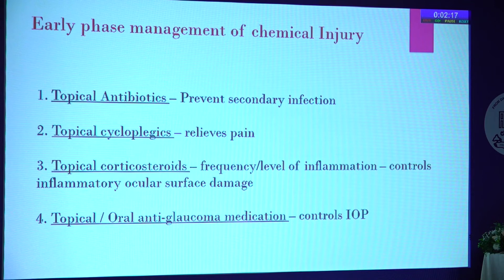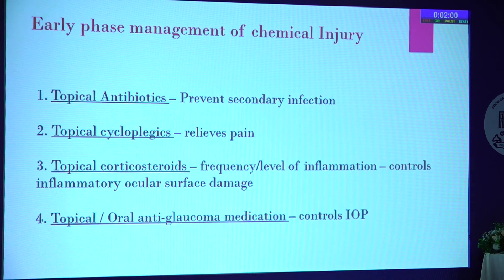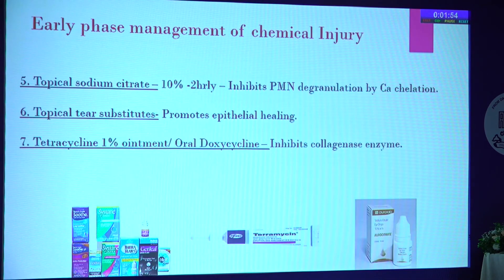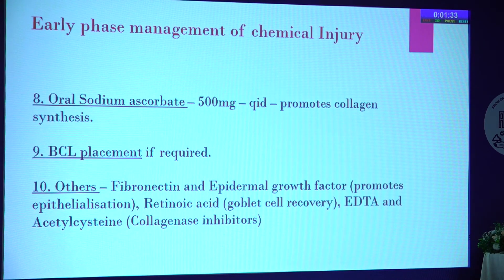The early phase treatment involves topical antibiotics to prevent secondary infection, topical cycloplegics to relieve pain, and topical corticosteroids — the frequency depends on the level of inflammation. For a very severe chemical injury, prednisolone acetate in hourly dosing may be required. Topical or oral anti-glaucoma medication is needed; oral is preferred since many topical medications are already being used. Topical sodium citrate — the only available preparation is Aureocitrate by Orolab — decreases inflammation by inhibiting PMN degranulation. Tetracycline 1% or oral doxycycline inhibits collagenolysis; oral doxy is preferred. Tablet Vitamin C 500 mg QID and BCL as required.